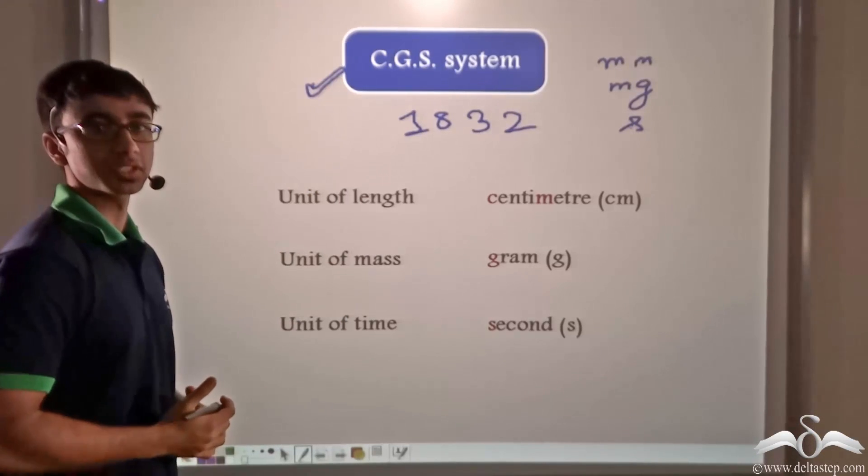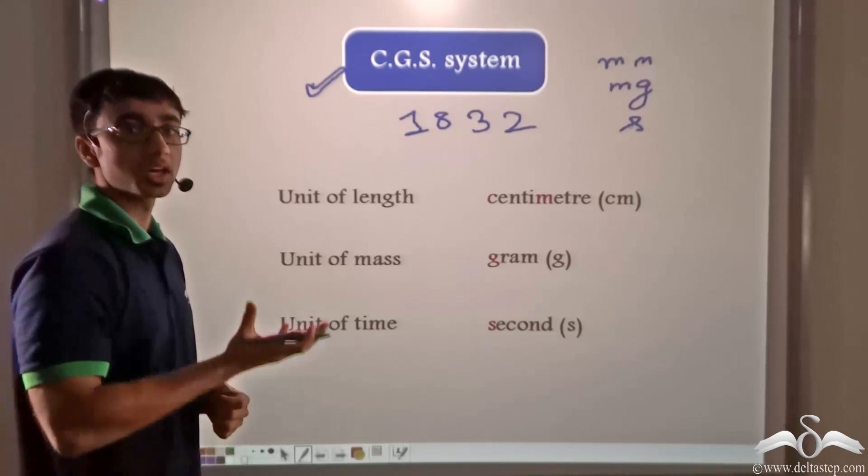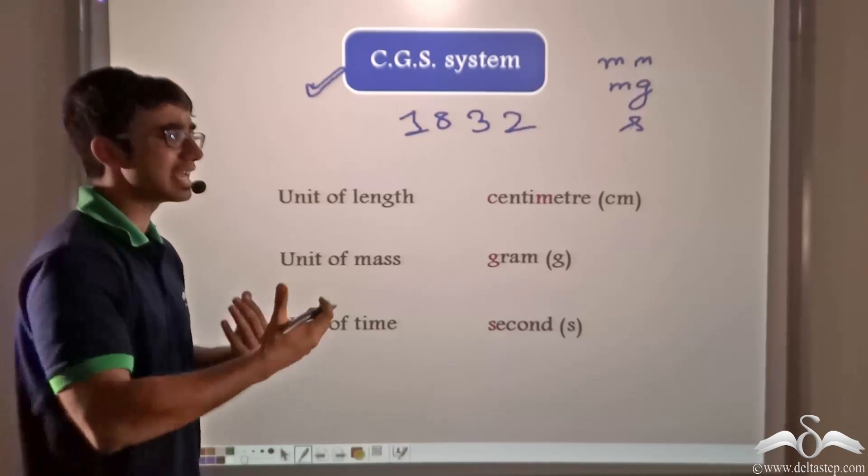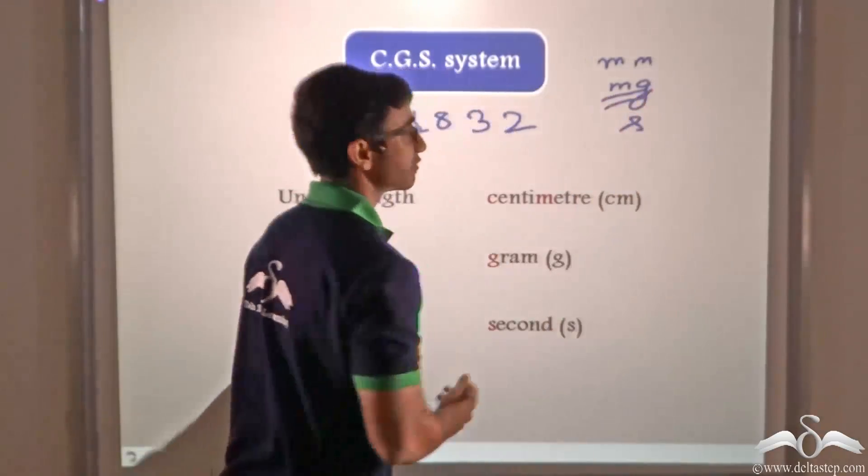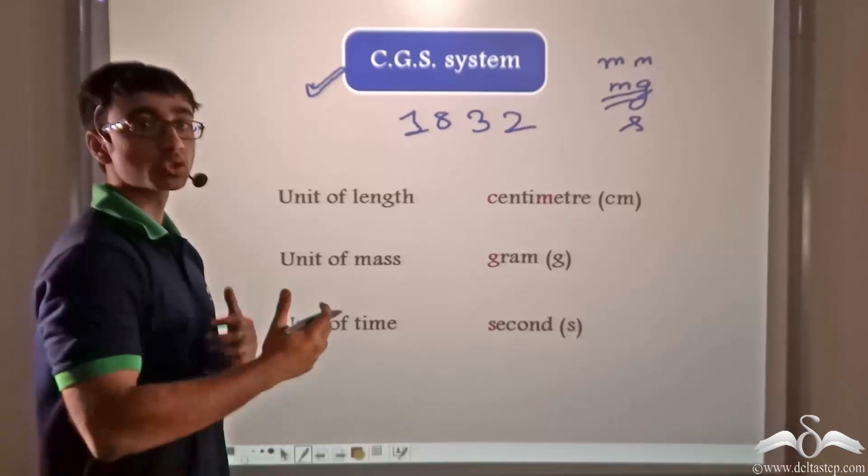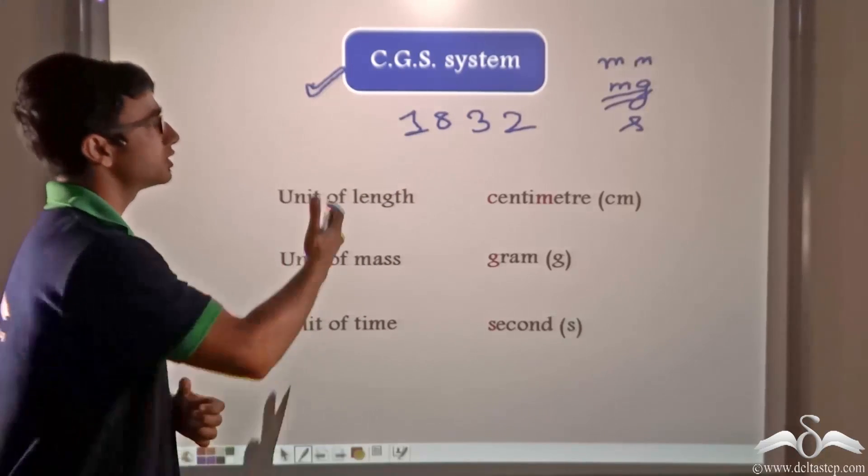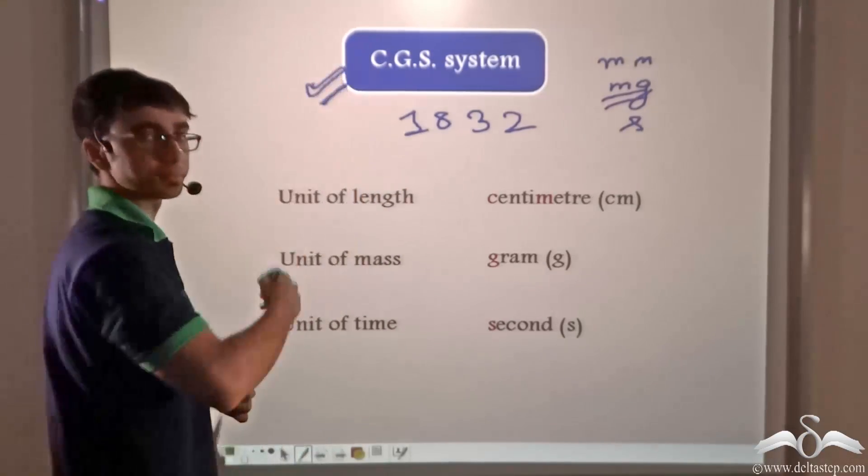Now let's say somebody wanted to measure the mass of a ball or the mass of any heavy object. Now in that case using milligrams would have been very inconvenient because it is a very small unit. So further developments around seven eight years later, saw the development of the CGS system.